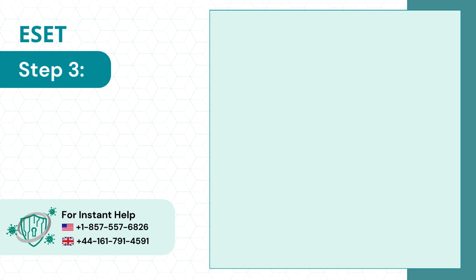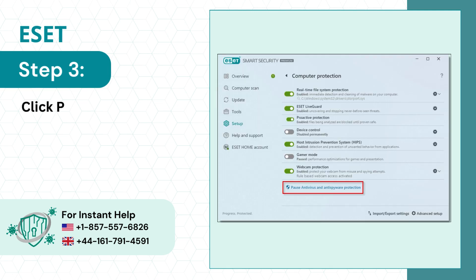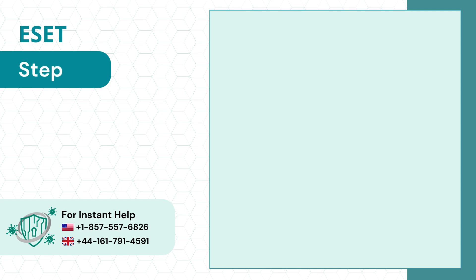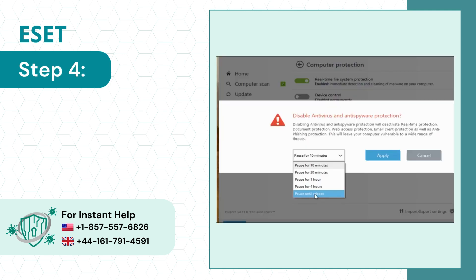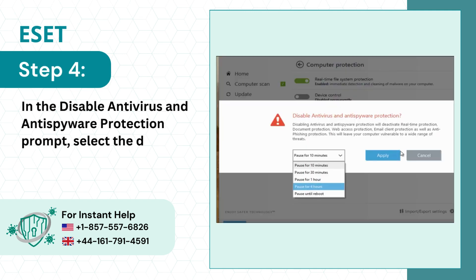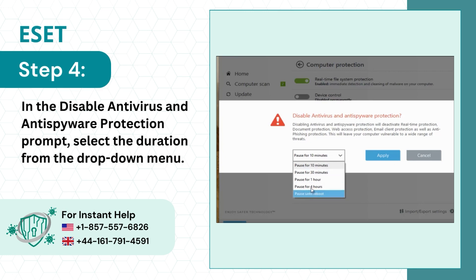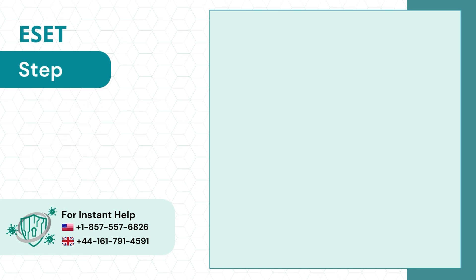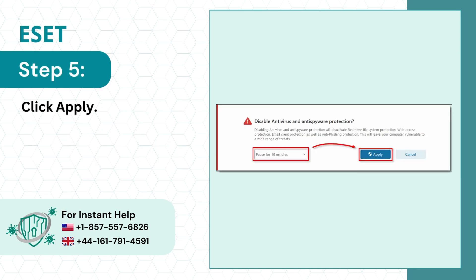Step 3: Click Pause Antivirus and Antispyware Protection. Step 4: In the Disable Antivirus and Antispyware Protection prompt, select the duration from the drop-down menu. Step 5: Click Apply.